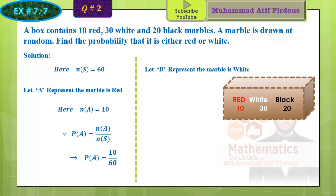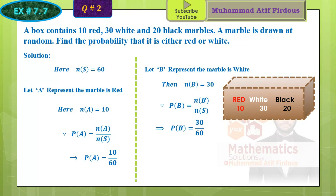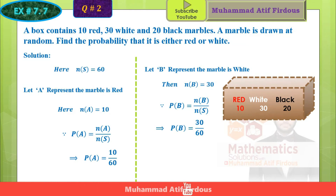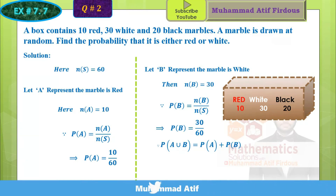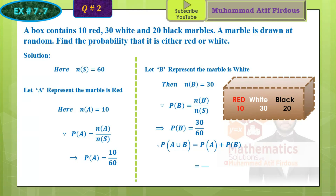Next, let B represent the white marble. There are 30 white marbles, so N of B equals 30. The probability of B equals required over total, which is 30 over 60. Now, A is red and B is white — the two are disjoint, nothing is common between them. So we can use the first formula: probability of A union B equals probability of A plus probability of B.